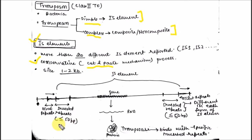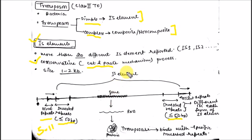As you can see in the diagram, the IS element contains inverted repeats of about 50 base pairs or less, which are flanked by direct repeats. The size of the direct repeats is 5 to 11 base pairs, and these direct repeats are generated by the IS element. There is a gene segment present in the IS element — the insertion sequence element — and these genes are transcribed into mRNA and translated into a protein known as transposase.